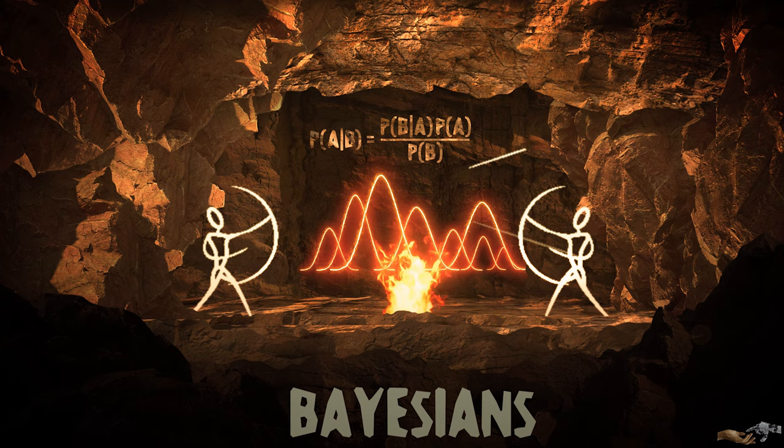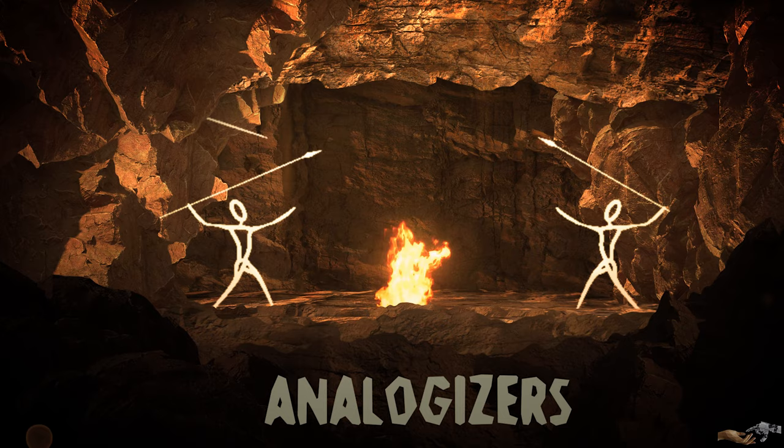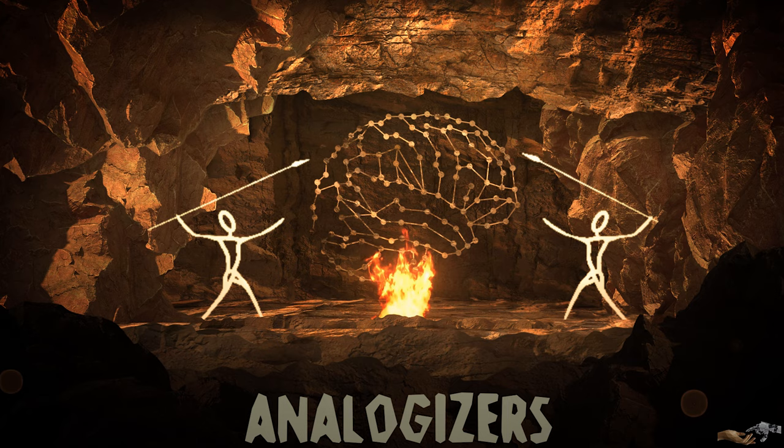The fifth and final tribe is the analogizers. This machine learning tribe focuses on techniques to match bits of data to each other. We have been discussing this approach quite a bit in the past few videos, with many core concepts of supervised and unsupervised learning tied to it.